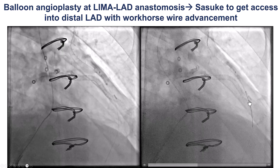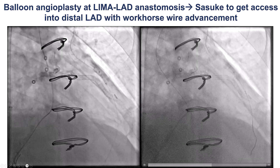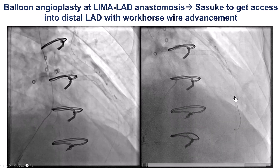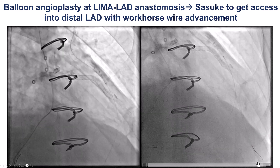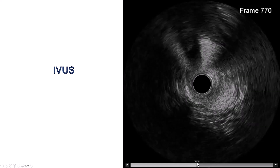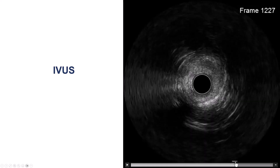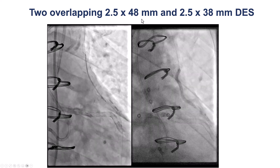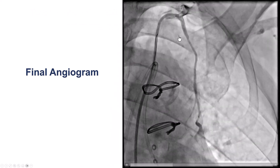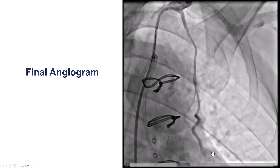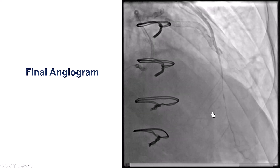We advanced a workhorse guidewire to the distal LAD — a very important step because we could not stent through the externalized guidewire advanced into the septal. We needed access to the distal LAD and achieved that with a workhorse wire. Intravascular ultrasound showed some diffuse disease more distally, and in the LIMA there were thick walls and some plaque. We placed two drug-eluting stents, 2.5 mm in diameter, 38 and 48 mm. On the final angiogram, there are still some areas of spasm, but the LIMA distally looks good. The distal vessel is small, but these vessels tend to grow once antegrade flow is restored.